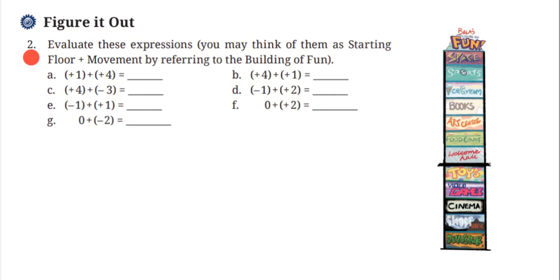The question is to evaluate these expressions. You may think of them as a starting floor plus a movement, by referring to the Building of Fun given in your textbook. If you don't have it, you can just draw a number line where zero is the ground floor, positive numbers are floors above it, and negative numbers represent floors below the ground.